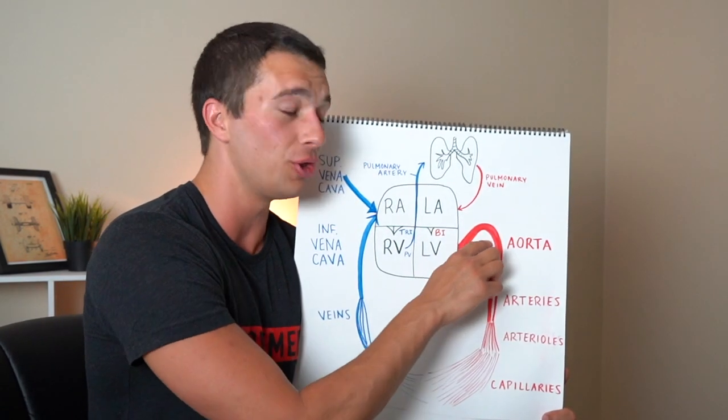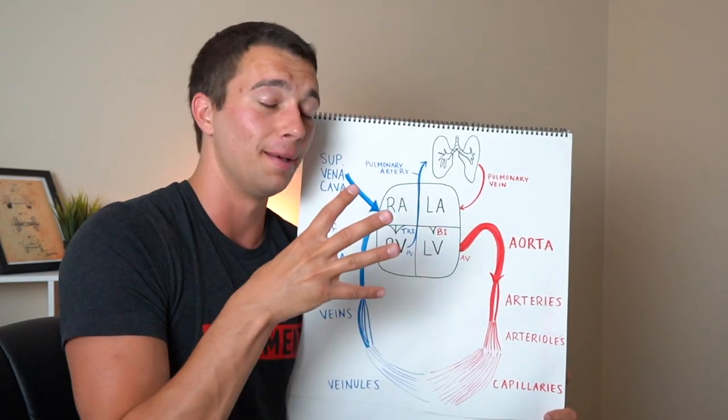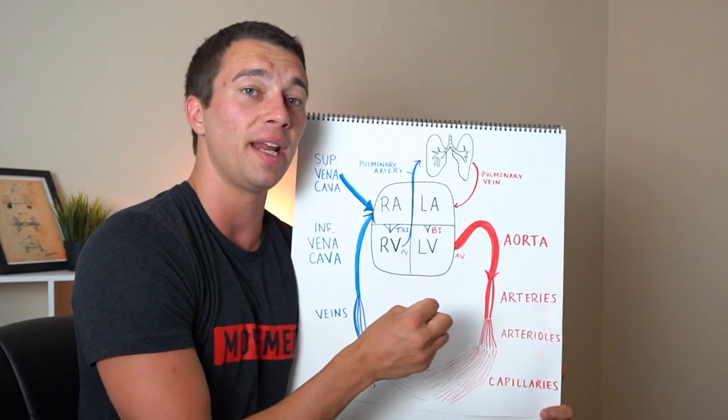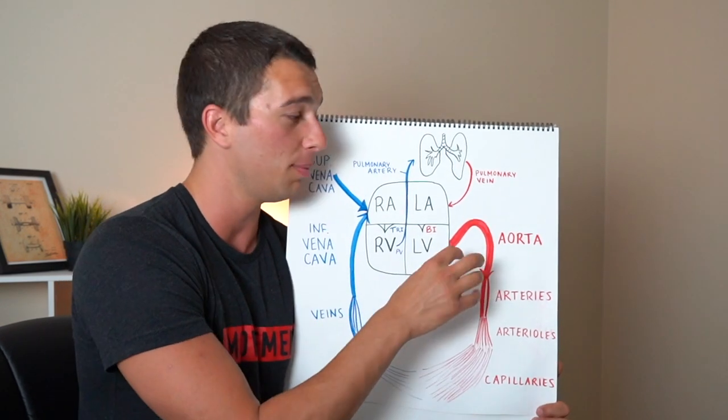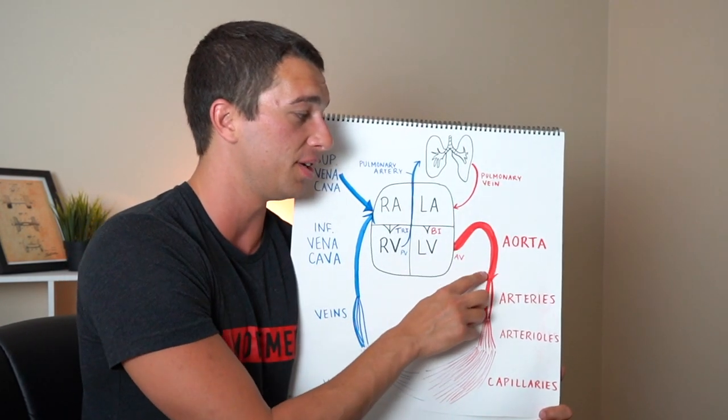So aortic valve is just going to the aorta and again the left ventricle is the biggest chamber. It's pushing blood out. As it contracts it's going to cause that systolic blood pressure to go up and push that blood out into the aorta.